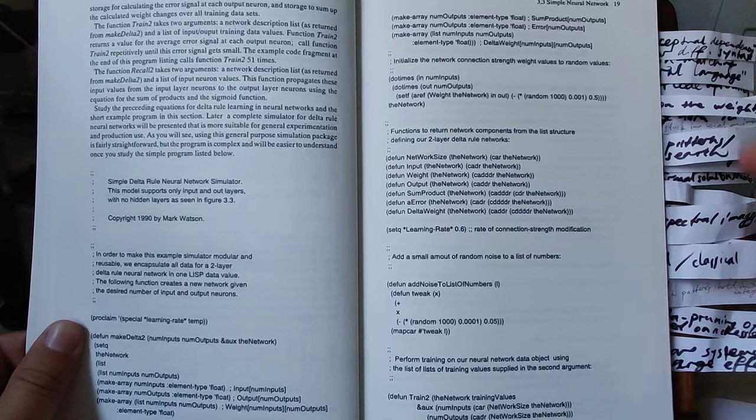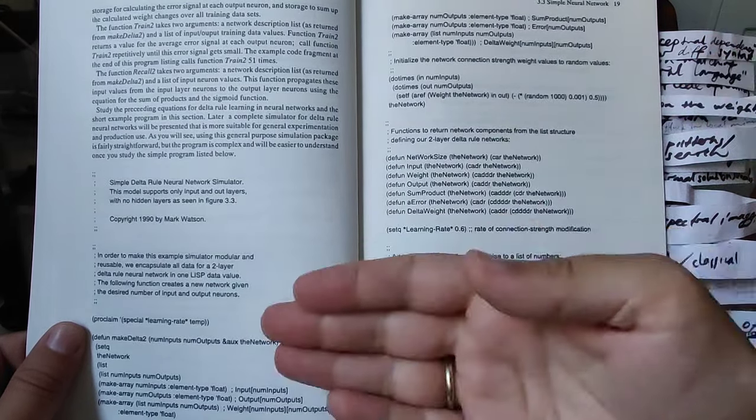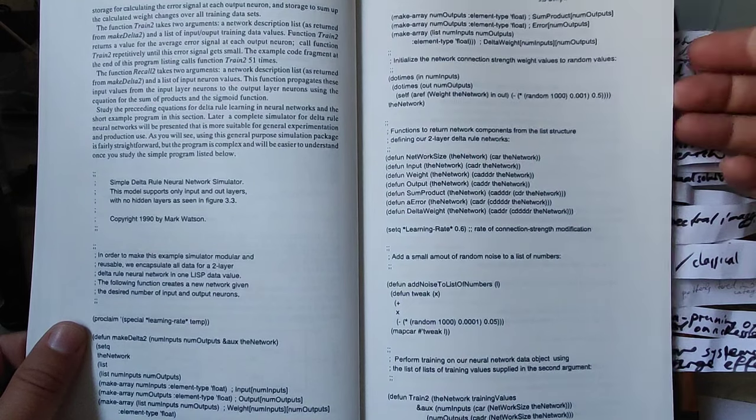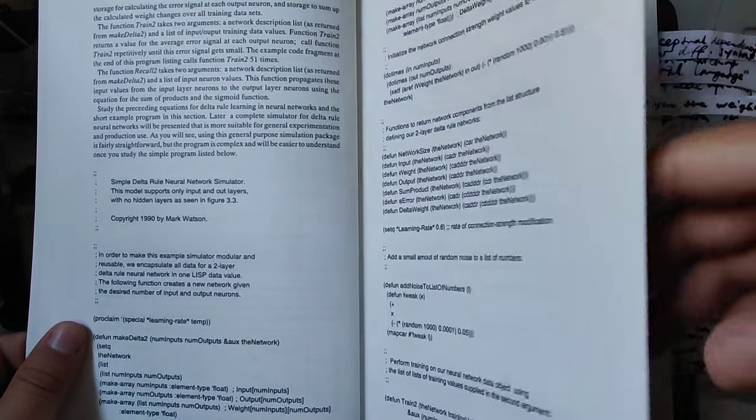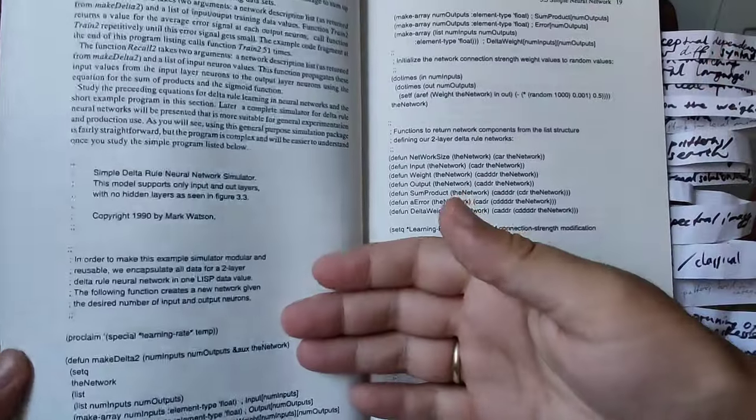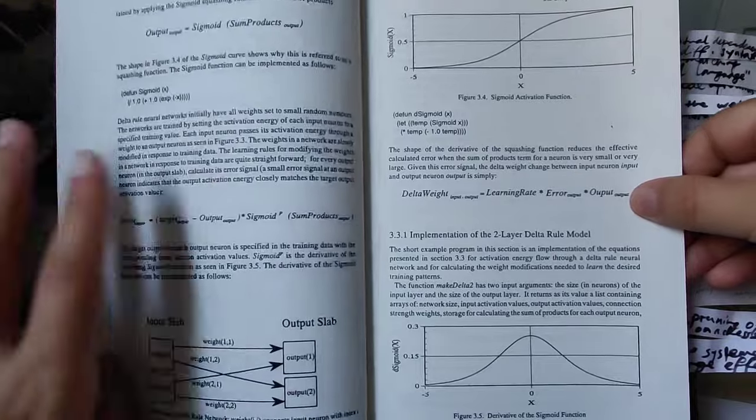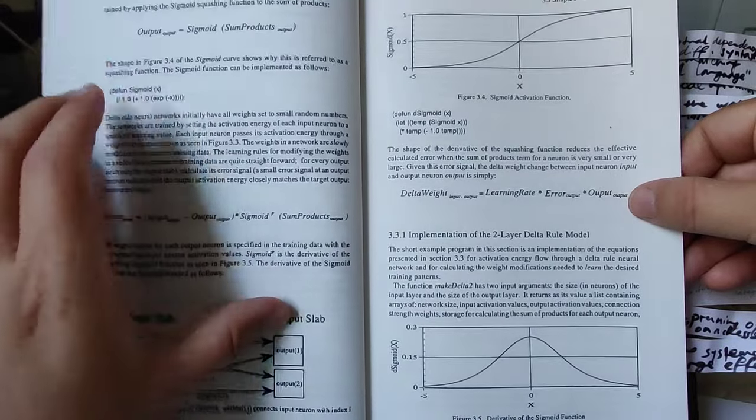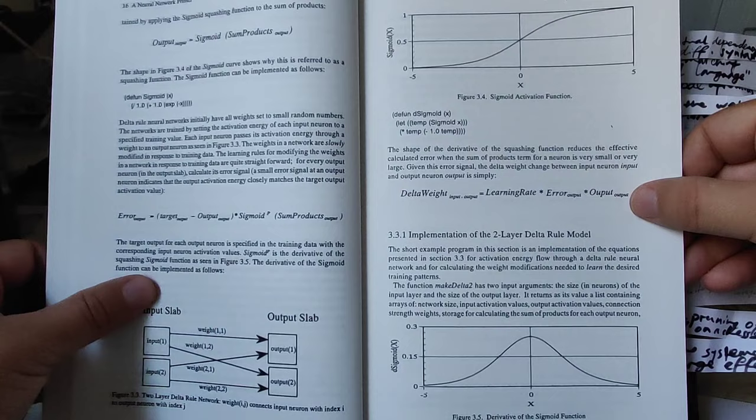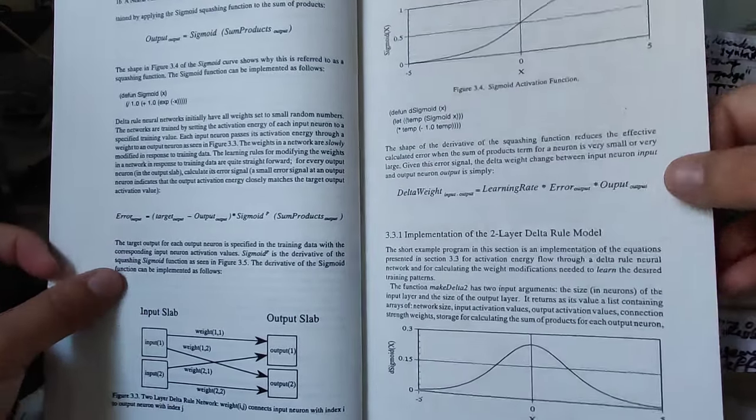You see here this whole story with the activation function, how one layer is influencing the other layer through the weights. You have the learning rate and the error and the output together.